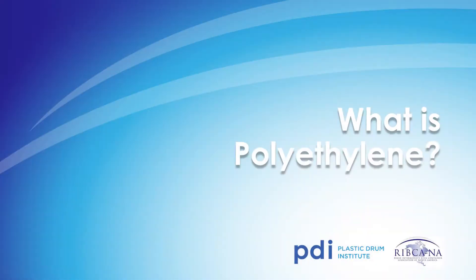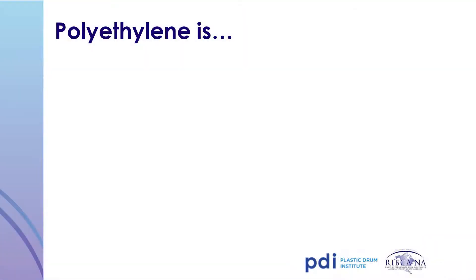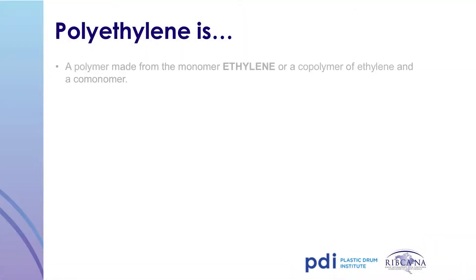What is polyethylene? Polyethylene is a polymer that is made from the monomer ethylene — the building block for the resin — which polymerizes and forms polyethylene.